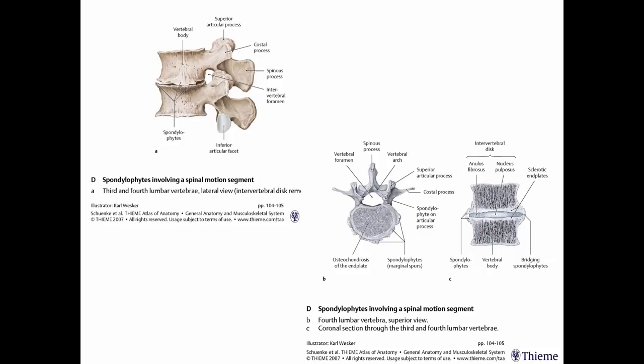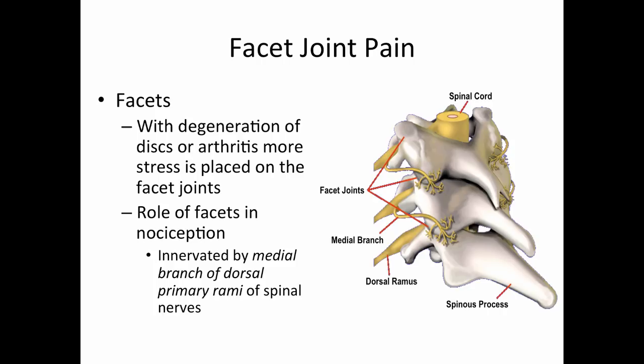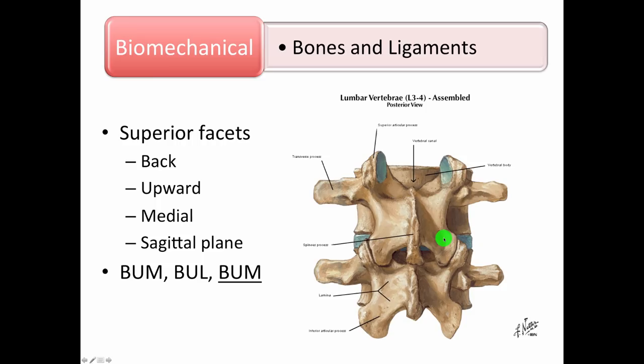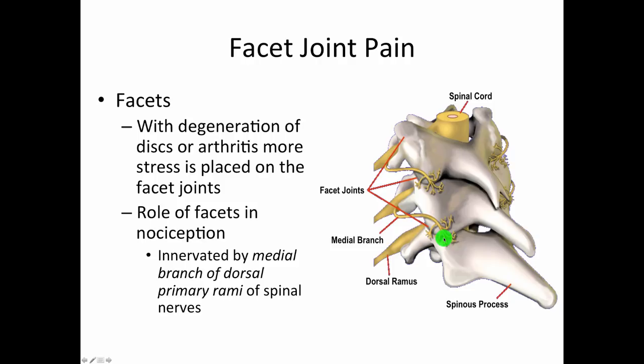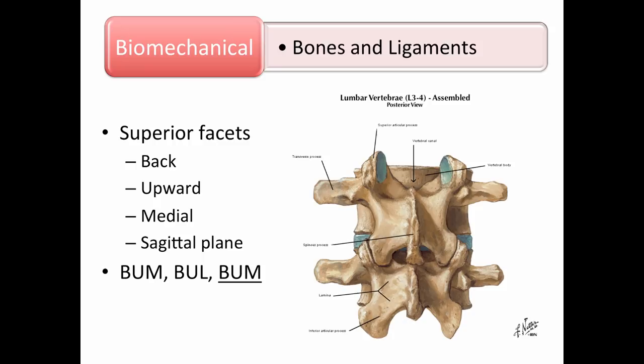Facet joints can be a significant source of pain. The medial branch of the dorsal primary rami of the spinal nerve innervates the facet joint — that's a localized source of pain. Clinicians actually do injections to block this nerve, or burn it with a rhizotomy, for facet joint pain. In the lumbar spine, the facets face back, up, and medially — more in the sagittal plane. Remember the mnemonic 'BUM' — back up and medial for lumbar.